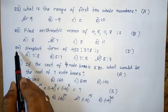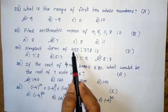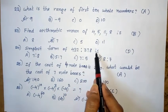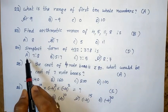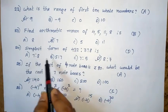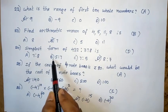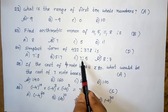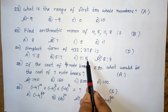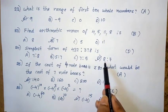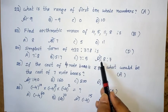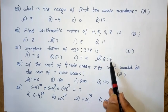Twenty-fourth question: Simplest form of 432 is to 370. Option A: 7 is to 8. Option B: 5 is to 7. Option C: 7 is to 5. Option D: 8 is to 7. The right answer is option D — 8 is to 7.